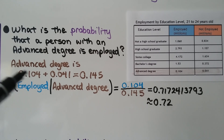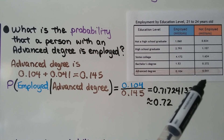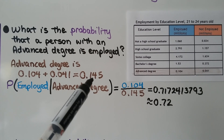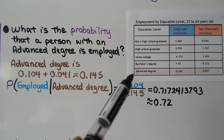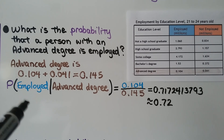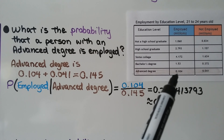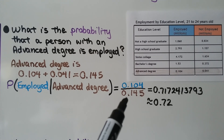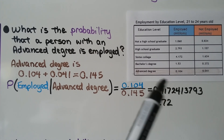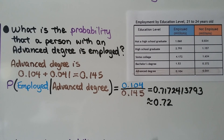We add the 0.104 employed with the not employed 0.041, and get a total for all with an advanced degree of 0.145. The probability that they're employed given that they have an advanced degree is 0.104 over 0.145 — this number over the total of advanced degrees. We do our division and get approximately 0.72.